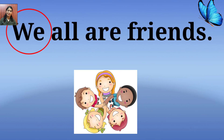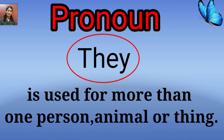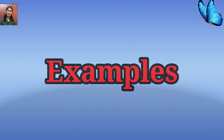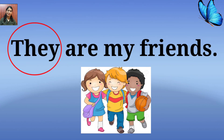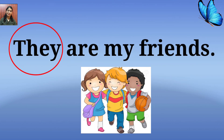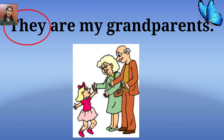The pronoun 'we' is used for more than one person. For example: we all are friends. The pronoun 'they' is also used for more than one person. For example: they are my friends, they are my grandparents.